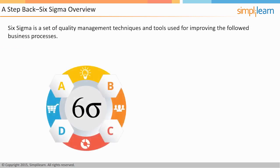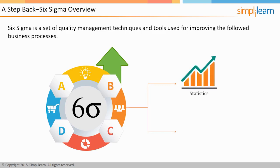As we all know, Six Sigma is a set of quality management techniques and tools used for improving followed business processes. But the important thing to learn here is that these techniques rely on statistics and actual data that is gathered only after analyzing the practiced processes.